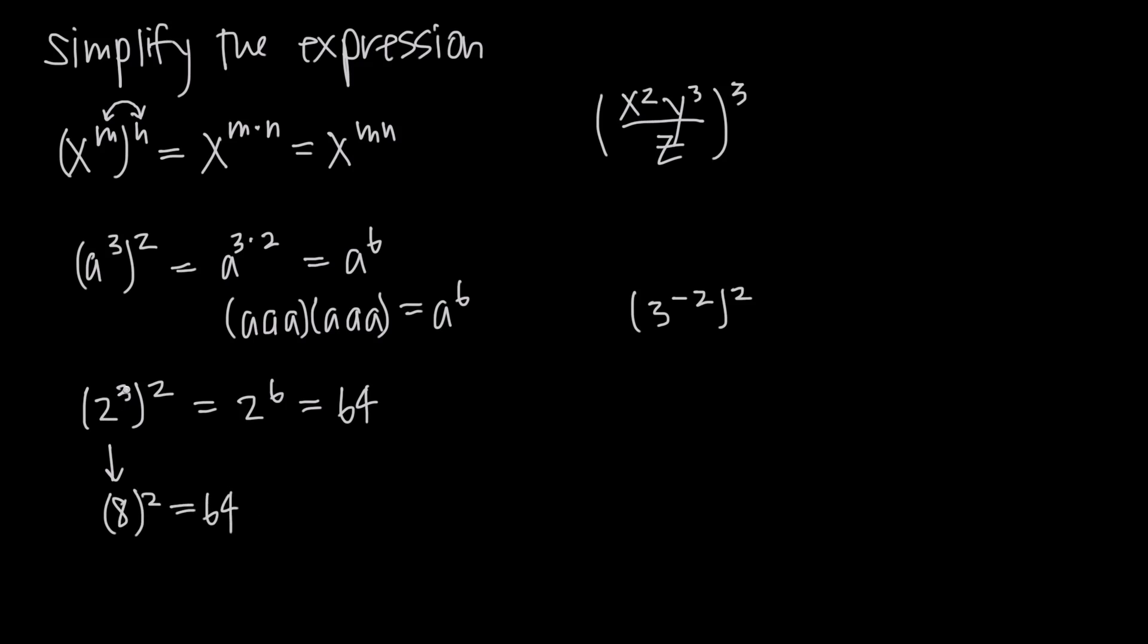And remember, if you're not sure, write out this 2 cubed, so that's 2 times 2 times 2, and then we're told by this exponent that we want two of these factors. So we multiply times 2 times 2 times 2, there's two factors of 2 cubed, and when we do all this multiplication together, 2 times 2 is 4, times 2 is 8, times 2 is 16, times 2 is 32, times 2 is 64.